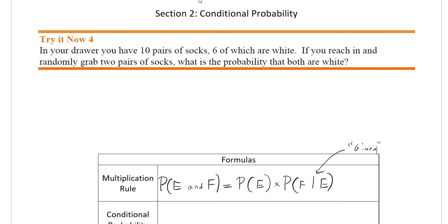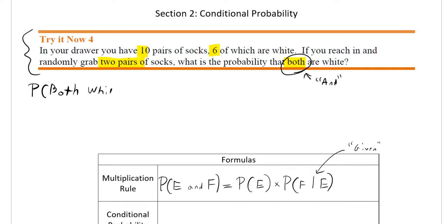To talk about conditional probability, I have an example here that we should be able to solve using what we talked about in the previous video. I recommend pausing to see if you can find this on your own. In your drawer you have ten pairs of socks, six of which are white. If you reach in and randomly grab two pairs of socks, what is the probability that both are white? The word 'both' is a keyword referring us to 'and' probability — the first pair is white and the second pair is white.